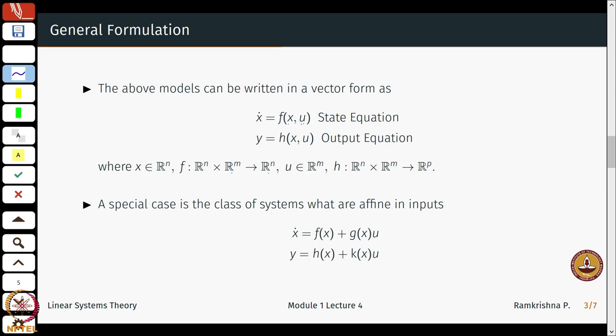Similarly with the outputs. Outputs again, it is like a map from R^n cross R^m, the state space, the input space to the output space. You could have p outputs. In the case of the pendulum I could measure, for example, the velocity as the output, the angular velocity, or even the position maybe as the output. Let us do a little example of this one.